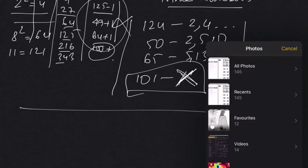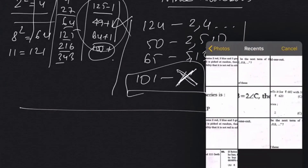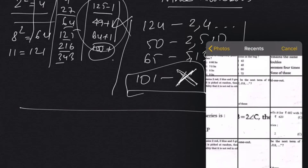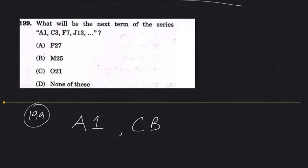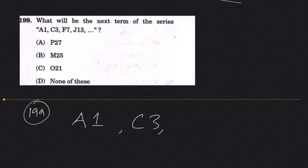Okay, if we have time I think we should solve one more question. Question 199: which will be the next term of the series? A1, C3, F7, J13.